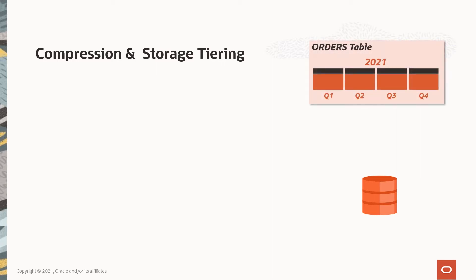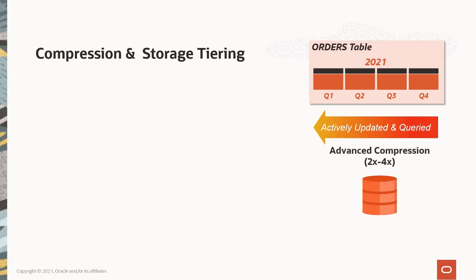Using our sales orders example again, we can see that we have a year's worth of data. Our most current quarter will be hot since it's being actively updated. The other quarters will also be actively queried, so they'll be quite warm. We'll want to compress these partitions with Oracle Advanced Compression, which is highly efficient for transactional data that is actively updated, and locate these hot partitions on our fastest tier-one storage to ensure our best performance.